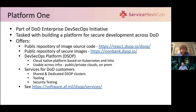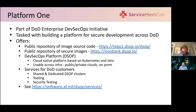We also have the Iron Bank, which is a way for the DoD to vet, validate, accredit, stamp, sign, and publish images using modern scanning tools — whether that's Twistlock, Anchor, or OpenSCAP if you care about STIGs. We layer all those tools on top to validate images against a trusted baseline and trusted supply chain, using UBI, Scratch, or DistroLess images as our bases.